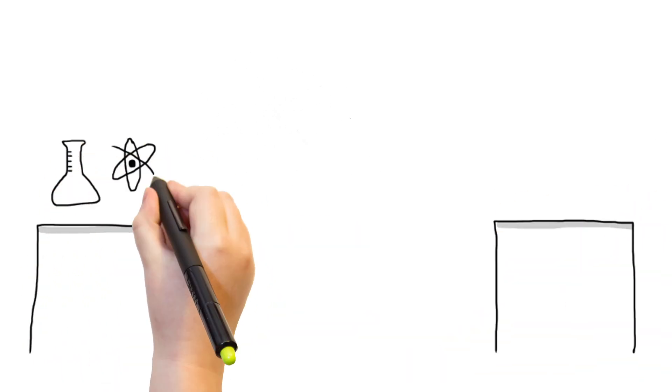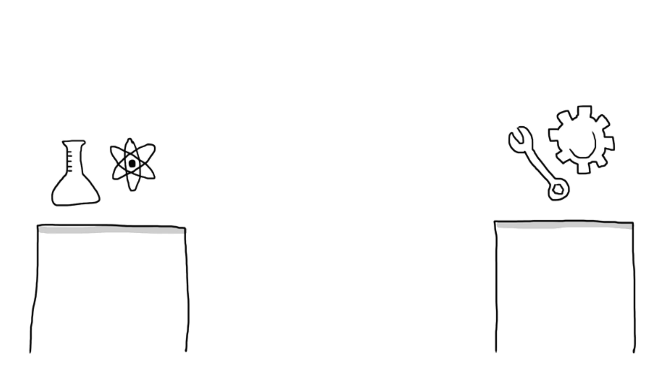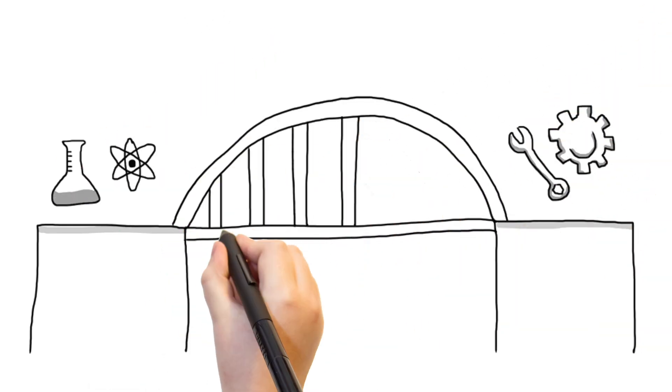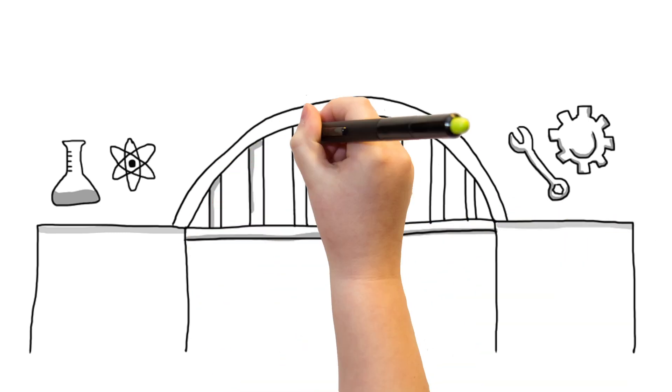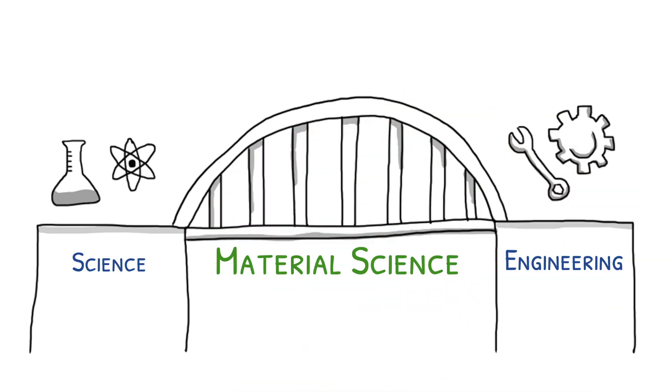Material science and engineering is an interdisciplinary field that uses physics and chemistry with elements of biology. Bridging the gap between science and engineering, material science is used to understand the structure and properties of materials, and how we can best exploit them.